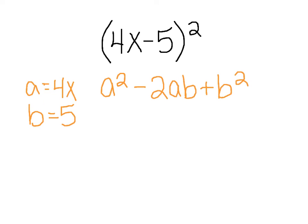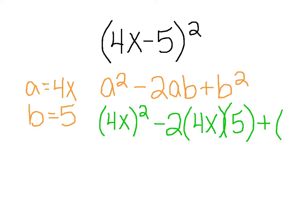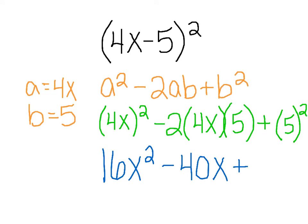So a squared, a is 4x, that's being squared, minus 2 times a, which is 4x, times b, which is 5, plus b squared, that's 5 squared. 4x squared, that's 4 squared times x squared. 4 squared is 16, x squared is x squared, so 16x squared, minus 2 times 4 is 8, 8 times 5 is 40. So minus 40x, plus 5 squared, which is 25.